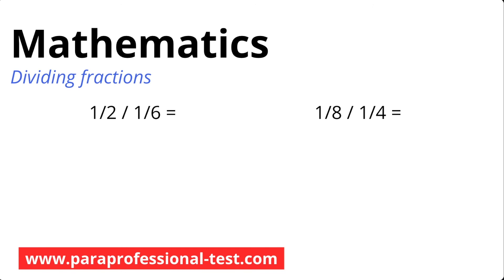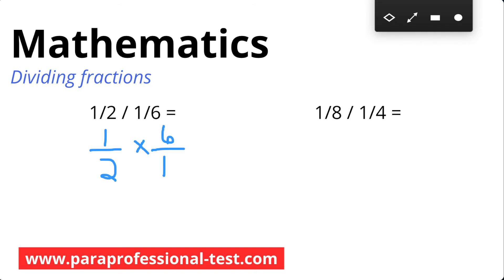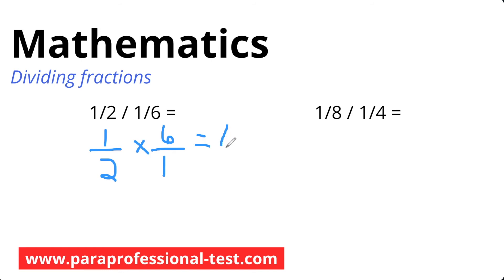Here are two examples that require division to solve. Pause the video and use the steps to solve the problems, then come back so we can work through these together. Using the three-step process, I'll begin by flipping the second fraction and rewriting the problem as a multiplication problem. The first fraction stays the same — 1 over 2 — and the second fraction gets flipped, so now we have 6 over 1. We change the division sign into a multiplication sign. Now we have 1 half times 6 over 1. Multiplying top and bottom gives us 6 over 2. The final step is to simplify: 6 divided by 2 is 3. You can write 3 over 1, or just keep it as 3.